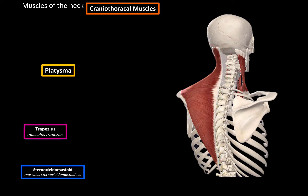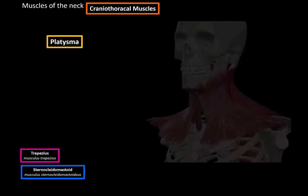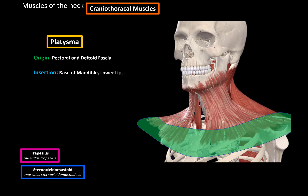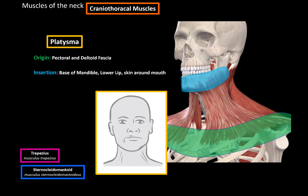The last muscle is the platysma, which is located very superficially on the anterior region of the neck and covers all the neck muscles. It originates from the pectoral and deltoid fascia and inserts at the base of the mandible, the lower lip, and the skin around the mouth. Its function is primarily controlling the tension of the skin of the neck — you'll often see it protruding as fibers on the neck when you tense it. It can also depress the angle of the mouth and the mandible.